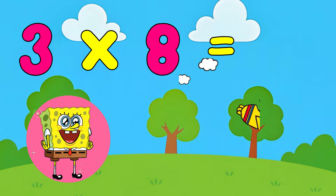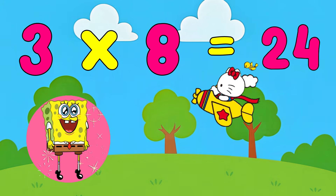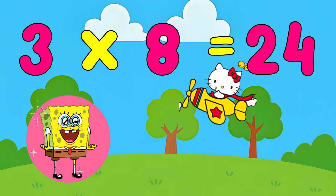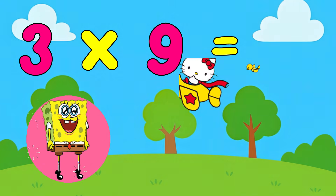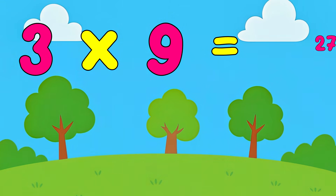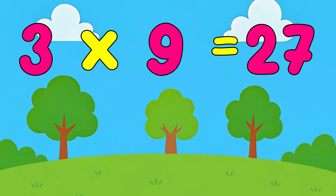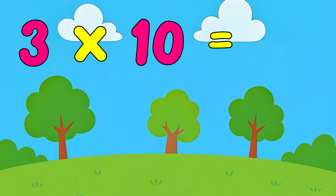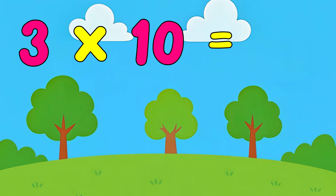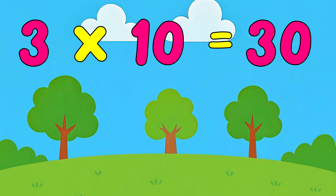Three times eight is twenty-four. Three times nine is twenty-seven. Three times ten is thirty.